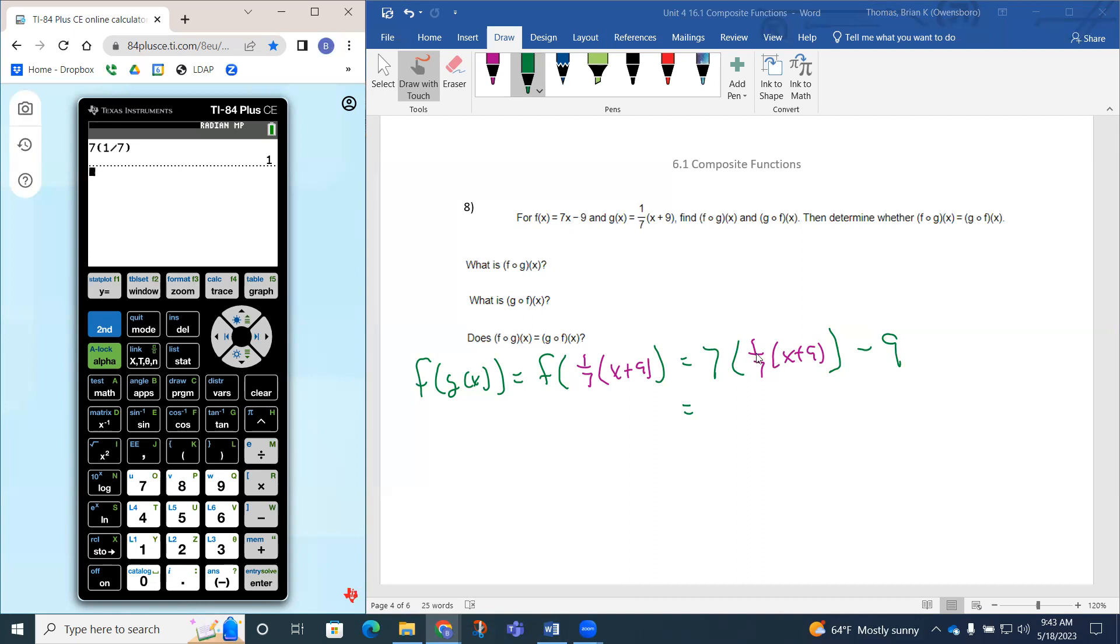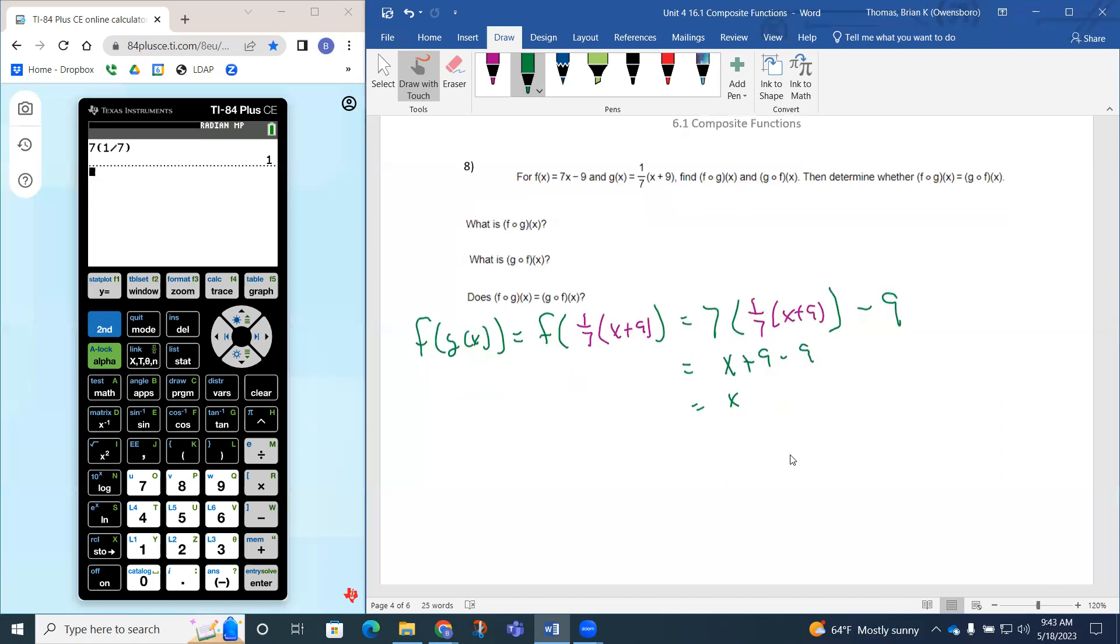So this just becomes 1 times x plus 9, which is just going to be x plus 9. So this just becomes x plus 9 minus 9. So x plus 9 minus 9, the 9s will just zero out and just give you x. So what is f of g of x? It's going to equal x.